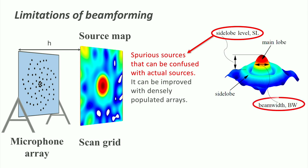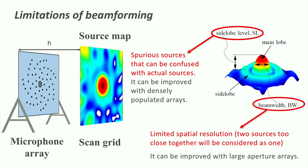Secondly, the main lobe's beamwidth limits the spatial resolution, basically the minimum distance at which two sound sources can be separated. This can be improved, on the other hand, by using large aperture arrays.